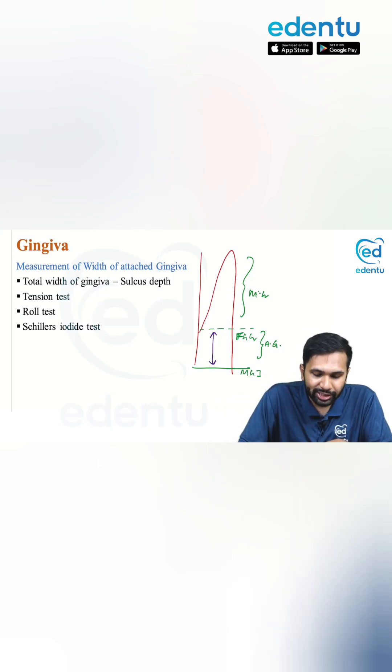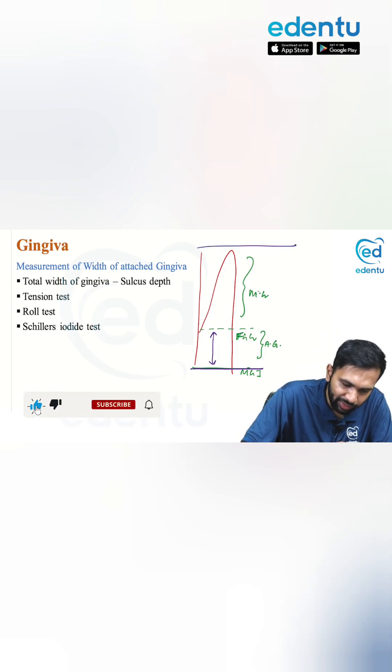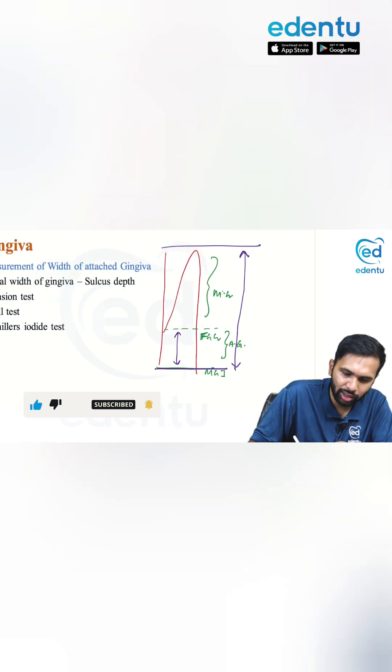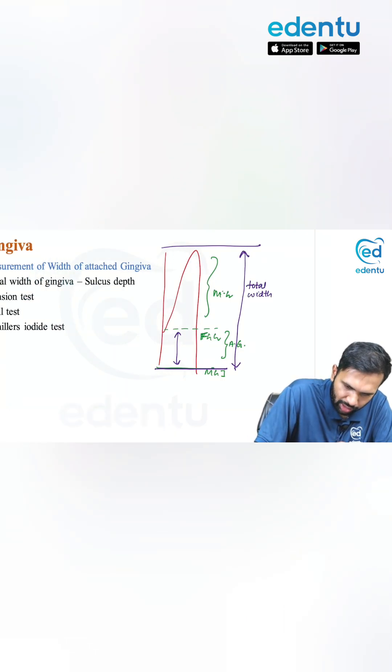What we normally do is see where the mucogingival junction is. Then we measure the entire width of the gingiva from the margin to the mucogingival junction. We measure the total width of the gingiva, then take a probe and measure the sulcus depth.